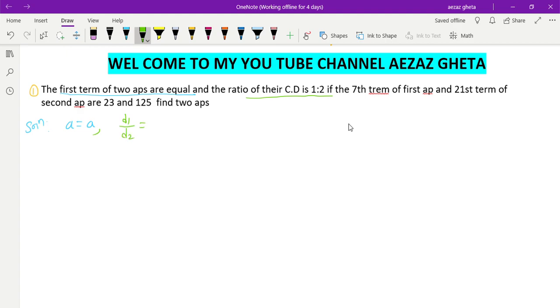the ratio is 1:2. If you cross multiply, you will get d2 equals twice d1. Next, the seventh term of the first AP, a7, equals 23, and the 21st term of